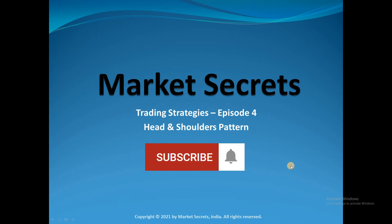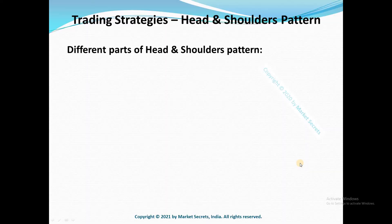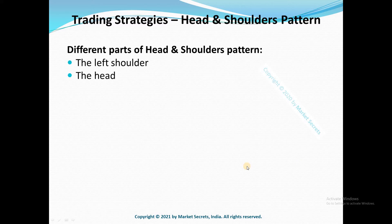This week let us learn about a bearish reversal pattern which is the head and shoulders pattern. Head and shoulders is a bearish reversal chart pattern and, as the name suggests, it looks like head and shoulders. When it comes to the head and shoulders pattern, there are 4 different parts which form this pattern: the left shoulder, the head, the right shoulder, and the trend line — which is otherwise called the neck line.